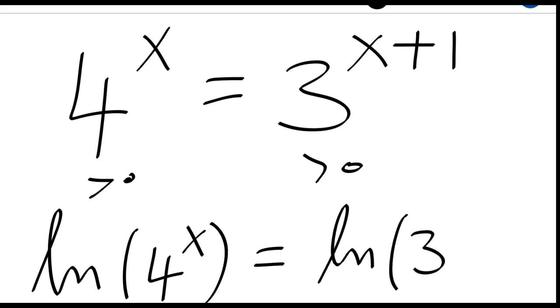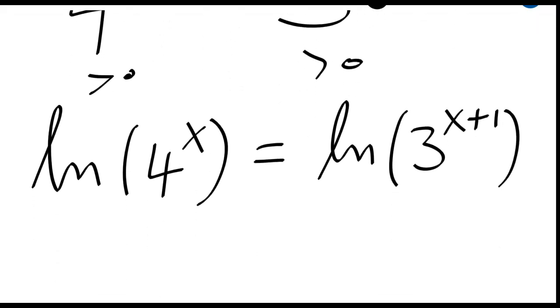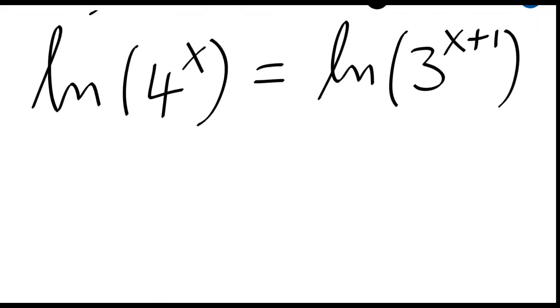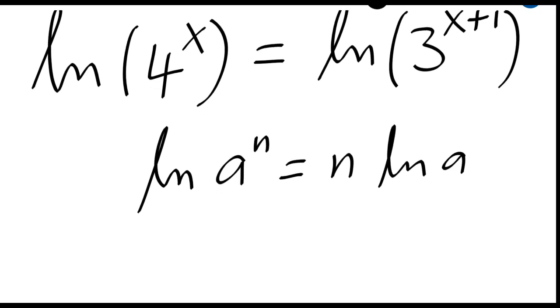We'll have ln of 4 to the power x equal to ln of 3 to the power x plus 1. Now using the properties of ln, I know that ln of a to the power n is equal to n ln of a.